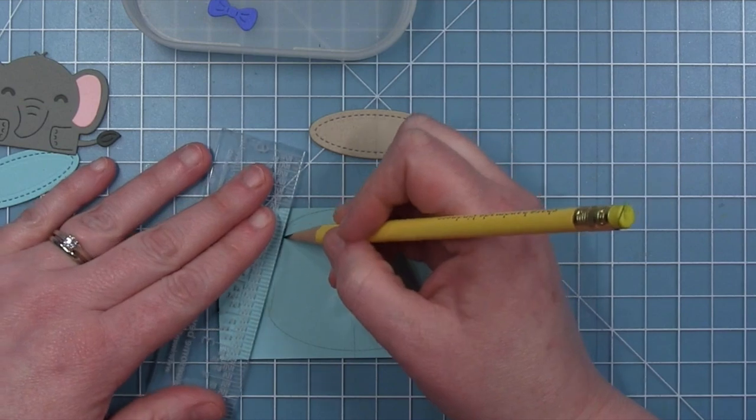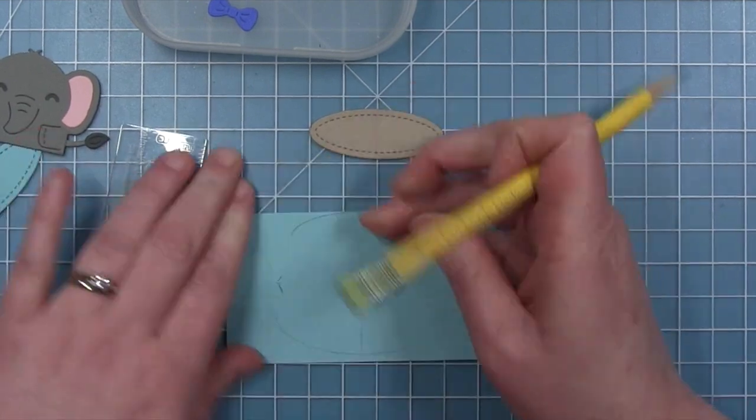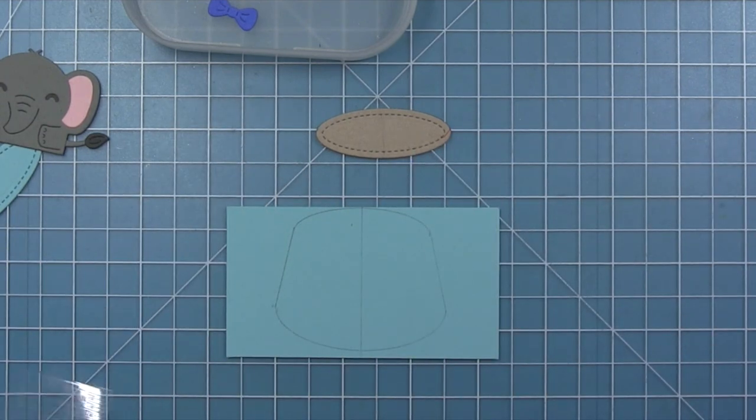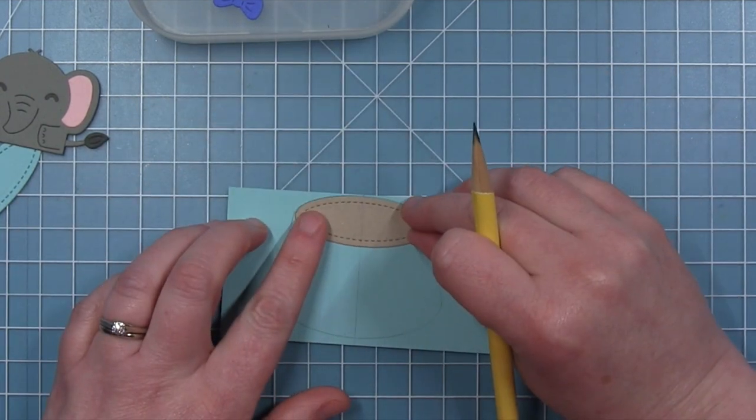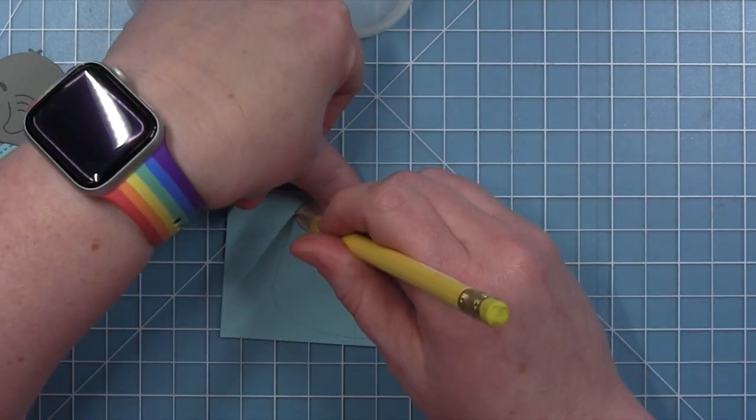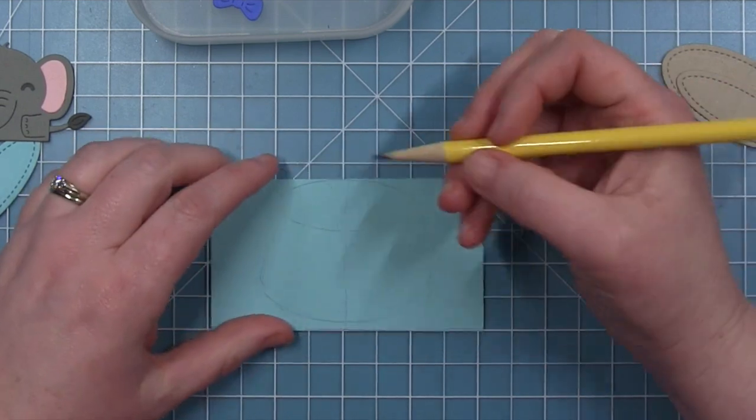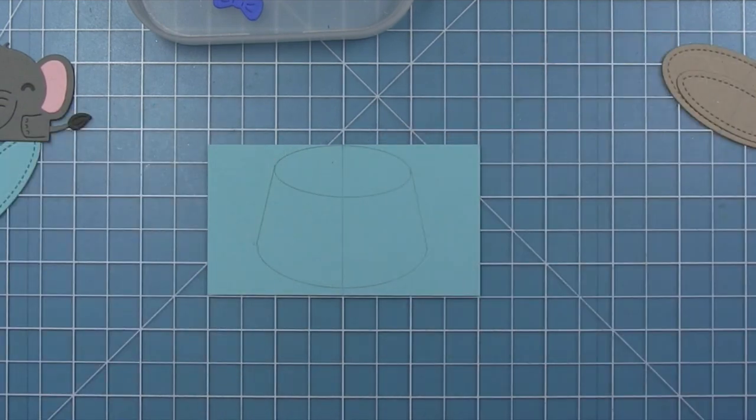That was a little off. So luckily it's pencil. I can erase it and try again a couple times. Now I'm going to take that little oval again and layer it back lined up with the top, trace the bottom of it. And then you can see that that is the shape that I'm trying to go for.